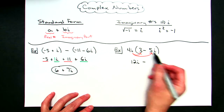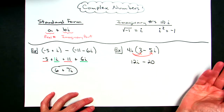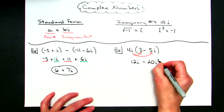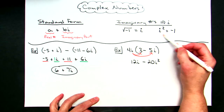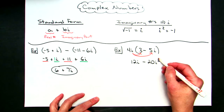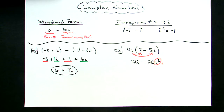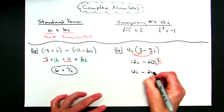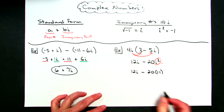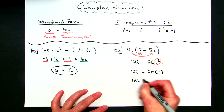When I multiply 4 times 5, that's going to be 20. And i times i, just like when you've got an x, is going to be i squared. If you're simplifying all the way, remember that i squared equals negative 1, so I replace it with negative 1. Showing all steps: 12i minus 20 times negative 1 — a negative times negative makes that positive — giving me 12i plus 20.